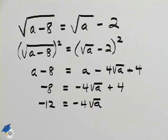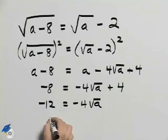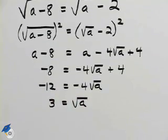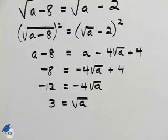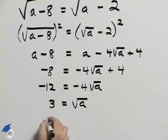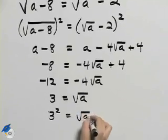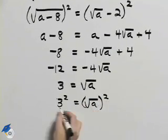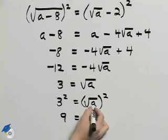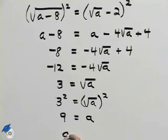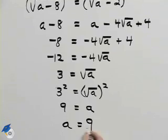And then finally I'll divide both sides by negative 4, which will give me 3 equal to the square root of a. Now we're interested in finding a, so we will again square both sides to undo the radical. 3 squared is 9. The square of the square root of a is a. So we have that a is equal to 9.